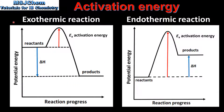Next we look at two energy level profiles for an exothermic reaction on the left and an endothermic reaction on the right. The activation energy for the forward reaction is shown by the red arrows on the energy level profiles. The activation energy is the difference in energy between the reactants and the highest point on the reaction profile. This highest point is known as the transition state.